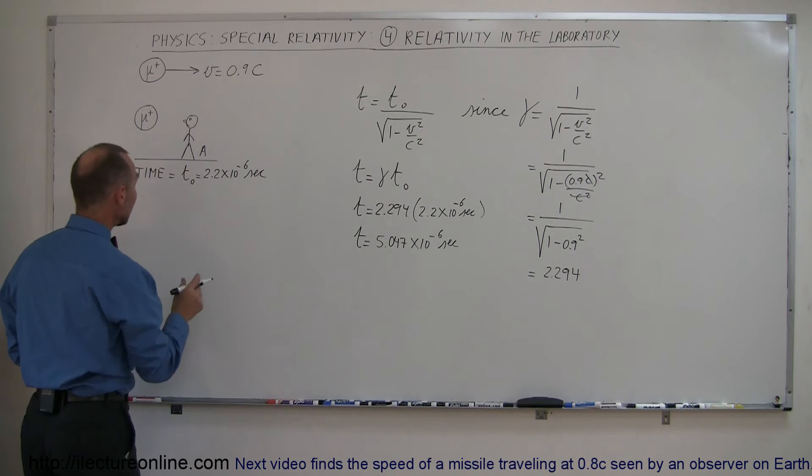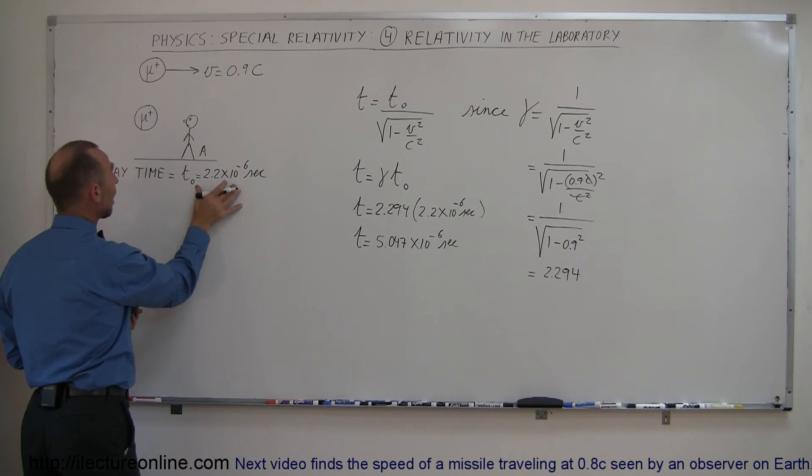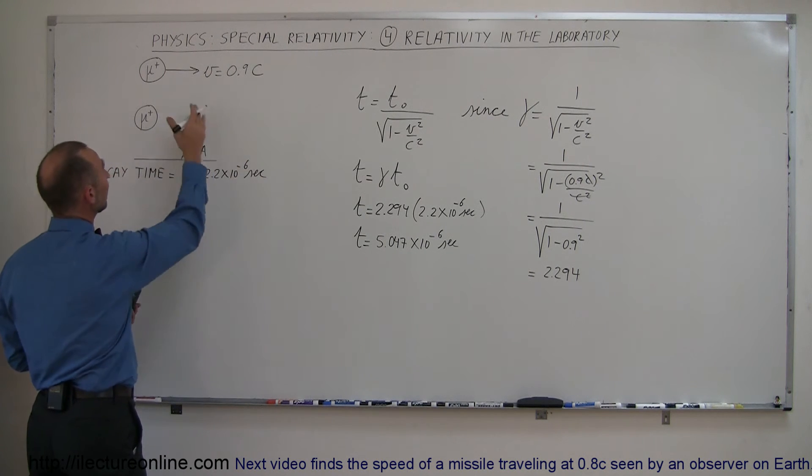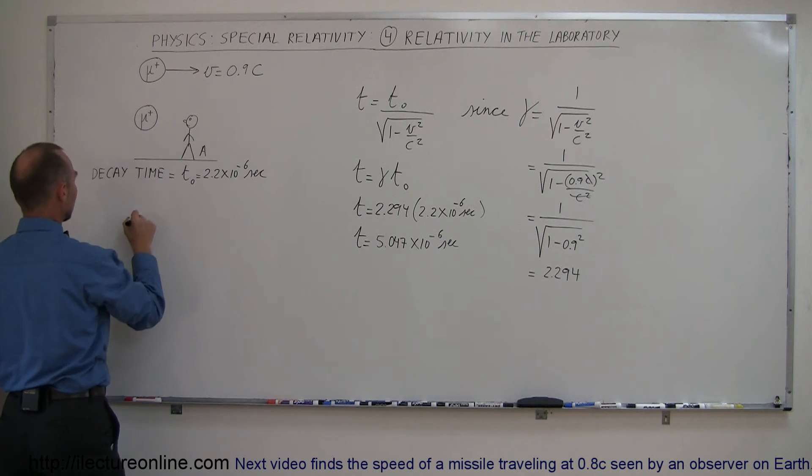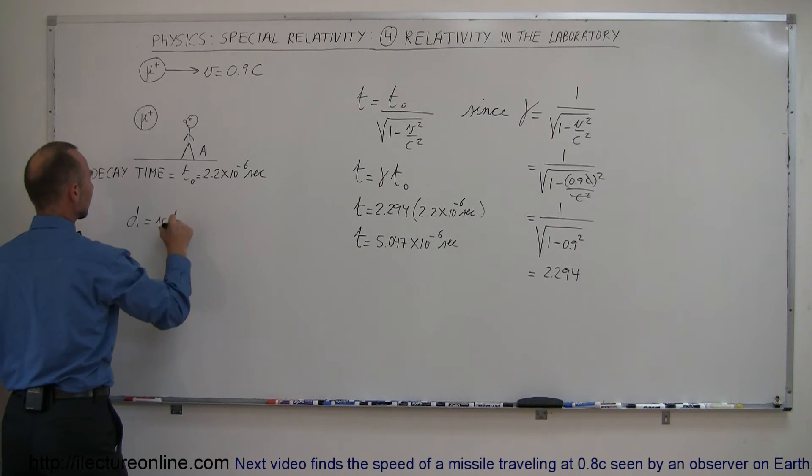Now, if this was the time that it decayed, how far would the particle travel in the laboratory? And we can of course say that distance equals velocity times time, if we did not take into account relativistic effects.